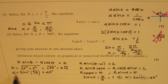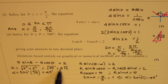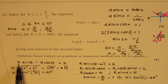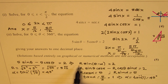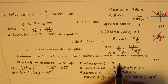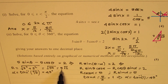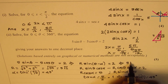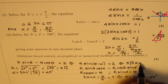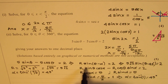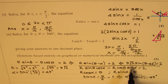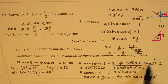We now know r equals 5√2 and α equals 45 degrees. So we can write the equation as 5√2 · sin(θ − 45°) equals 2. Therefore sin(θ − 45°) equals 2 over 5√2, which simplifies to √2 over 5. This is simpler to solve.